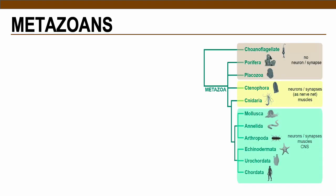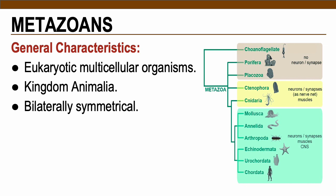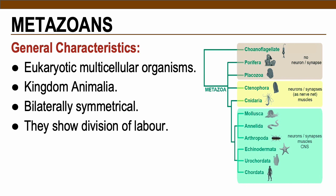Metazoans or animals are eukaryotic multicellular organisms belonging to kingdom Animalia, mostly bilaterally symmetrical — meaning their left and right portions are similar. Just like humans, they show division of labor, meaning these organisms usually have a male and female counterpart. Unlike plants or protozoans, animal cells lack a cell wall.